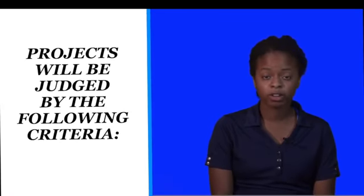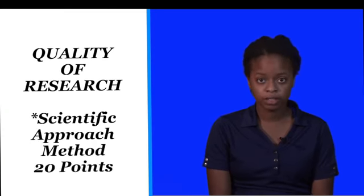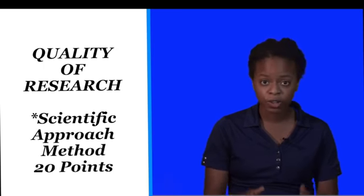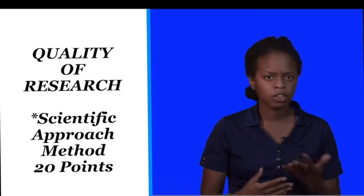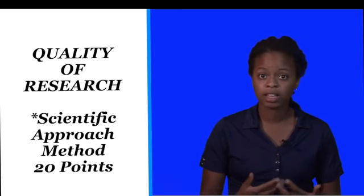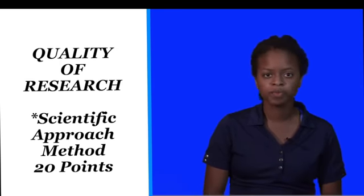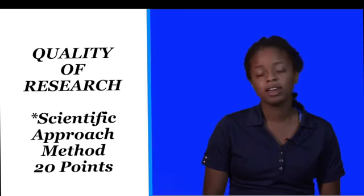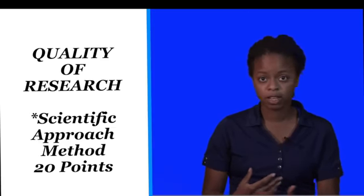Projects will be judged by the following criteria. The first is quality of research — your scientific approach or scientific method will be worth 20 points. Make sure that you're using a real scientific approach or method. You can use the scientific method you've learned in school, but you can also reference textbooks or different papers and see what other researchers have done. One good way to do this is to watch videos on YouTube where researchers talk about their work and communicate their research method.